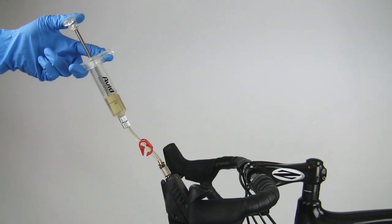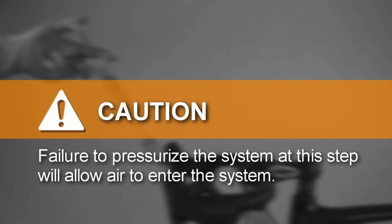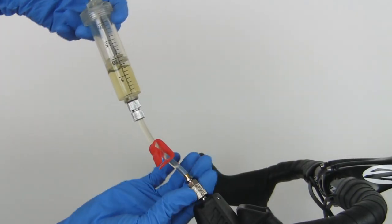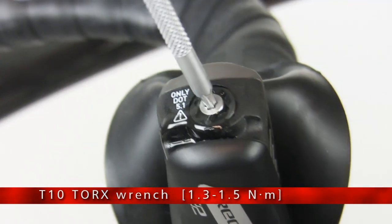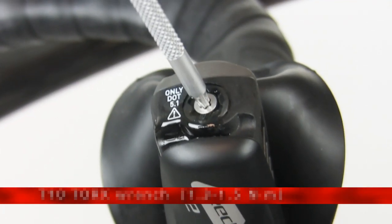Apply a small amount of pressure to the syringe plunger. Failure to pressurize the system at this step will allow air to enter the system. Remove the syringe. Reinstall the bleed screw into the pool of fluid in the bleed port.